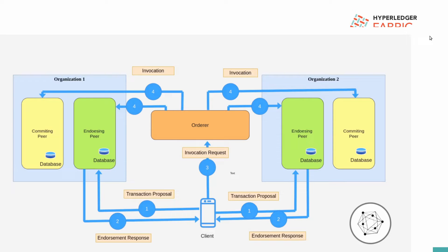There are three phases. First one is the endorsing phase, second one is the ordering phase, and third one is the validating phase. When the client creates any transaction proposal, he signs the transaction proposal with his private key. That signed transaction proposal is sent to all the endorsing peers, so the client has all the information about the endorsing peers.